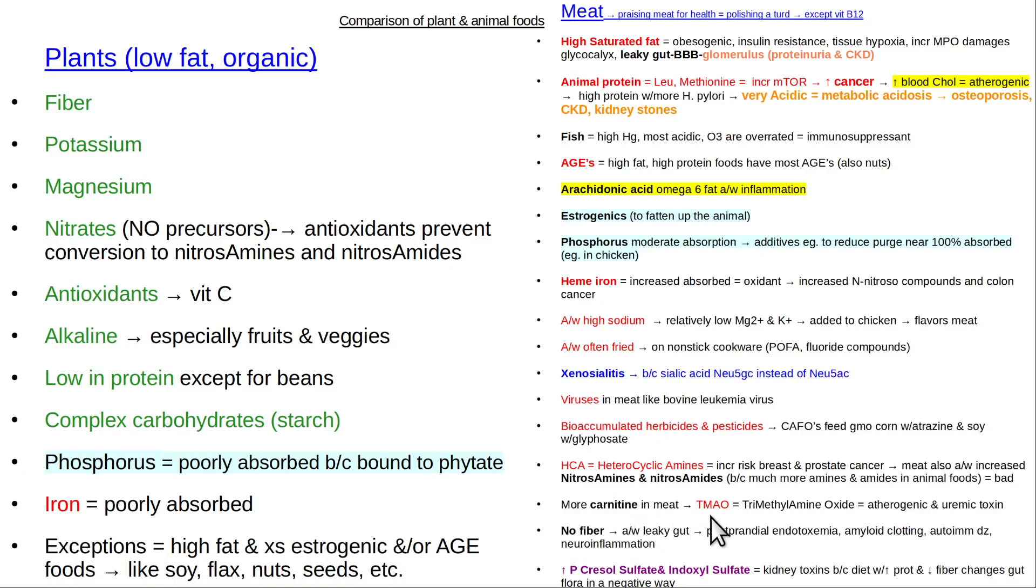So what I'm trying to say is bad secondary processes are activated by eating more meat. Meat's got more carnitine in it, and that ends up being converted to trimethylamine oxide, which is very pro-atherogenic. It's also toxic to the kidneys.